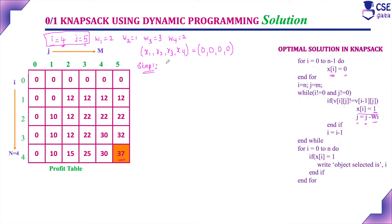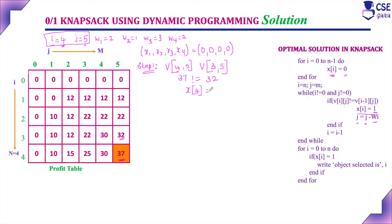Step 1: v of i comma j, where i is 4 and j is 5 — so v[4, 5]. In the profit table, v[4, 5] equals 37. And v[i minus 1, j] is v[3, 5], which equals 32. Check the condition: 37 is not equal to 32, so the condition is true. Therefore, x of i — that is, x4 — is selected, and we set x4 equal to 1.